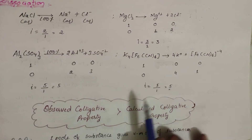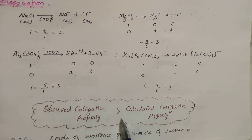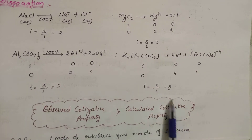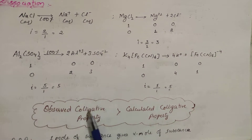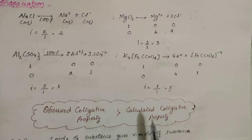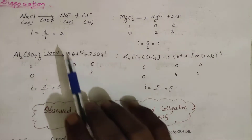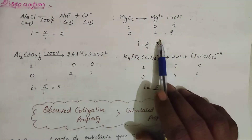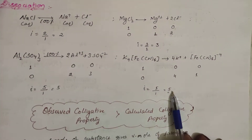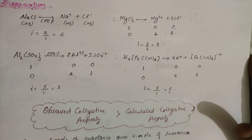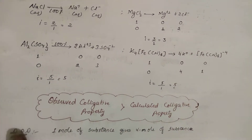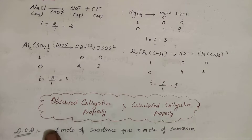In summary, for dissociation, the observed colligative property is greater than the calculated colligative property. For NaCl it is 2×, for MgCl₂ it is 3×, and for Al₂(SO₄)₃ and K₄[Fe(CN)₆] it is 5×. This is with respect to 100% dissociation.